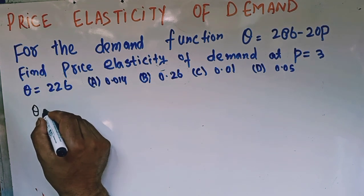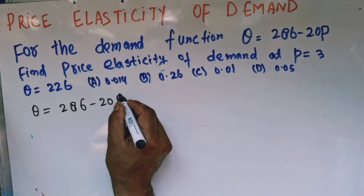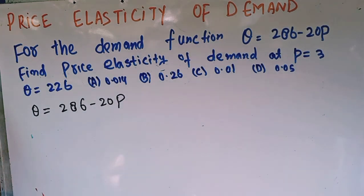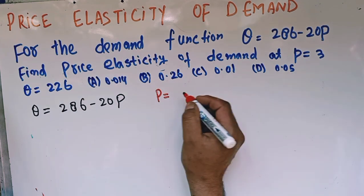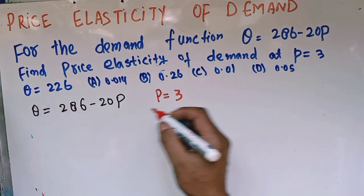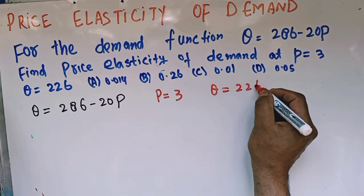We are given the quantity demanded equals 286 minus 20P. This is our demand function. Also, the initial price is 3 and quantity demanded at this price of 3 is 226. We need to calculate the elasticity of demand.